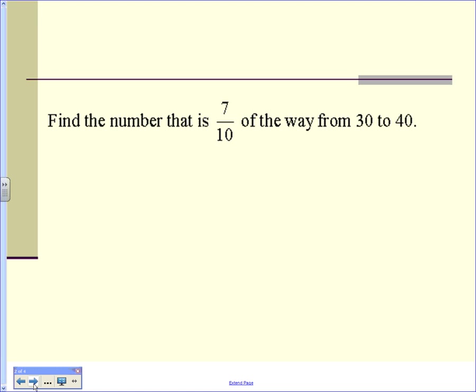Does everybody have an answer? Okay, what would you think it would be? 37. Why 37? Because you go to 40 minus 30 is 10, and 7 tenths of the way is 7.